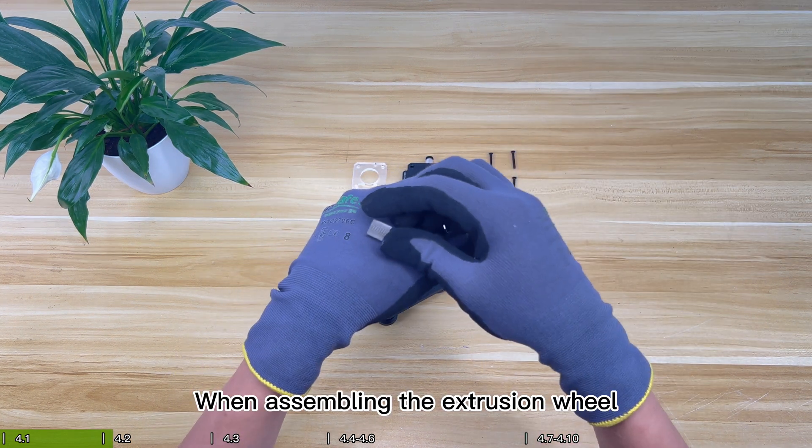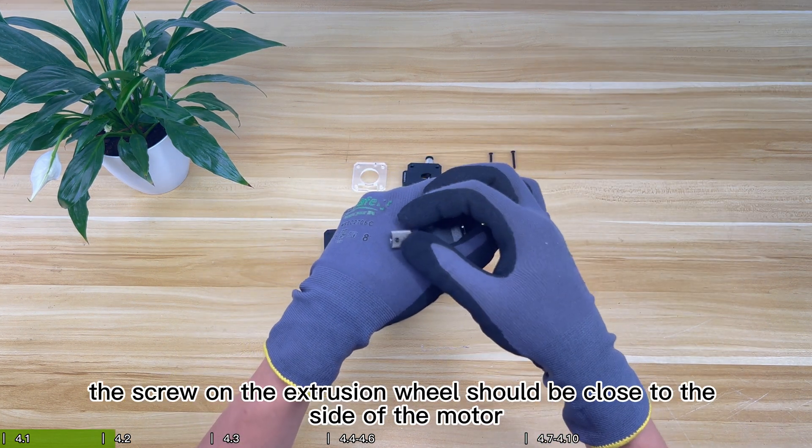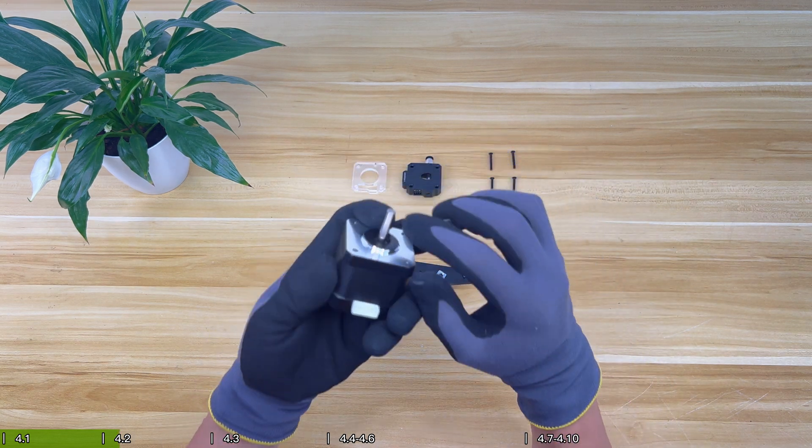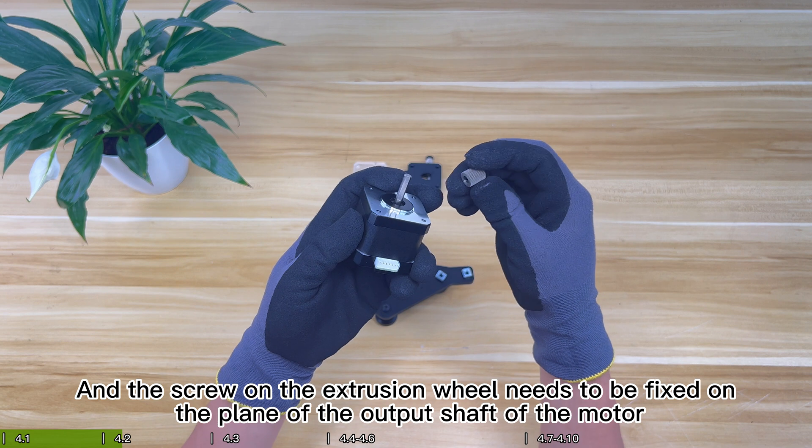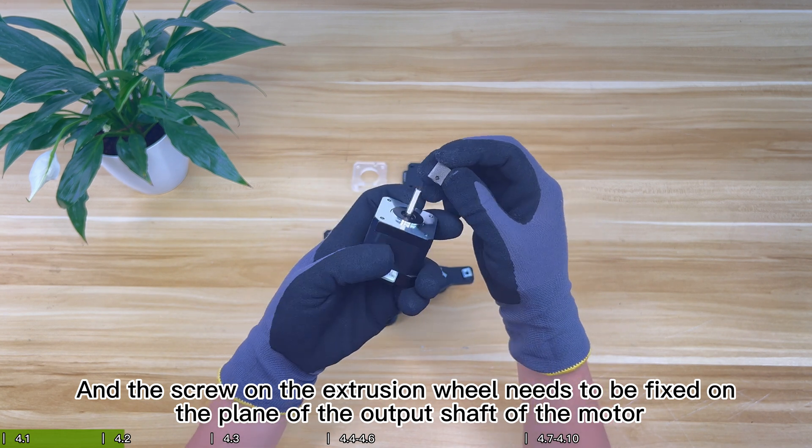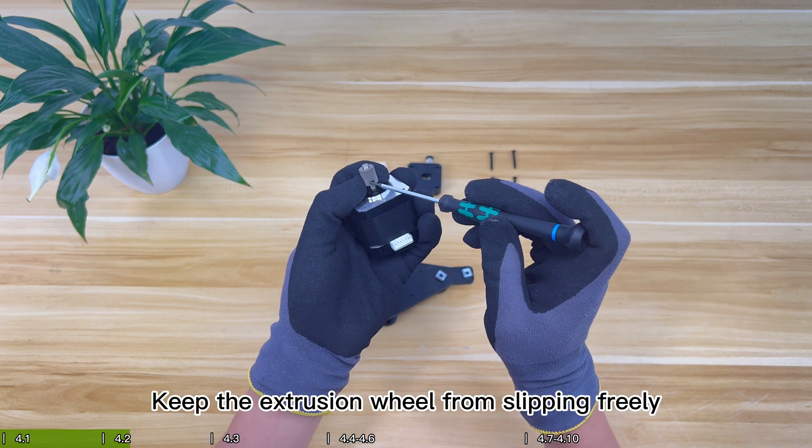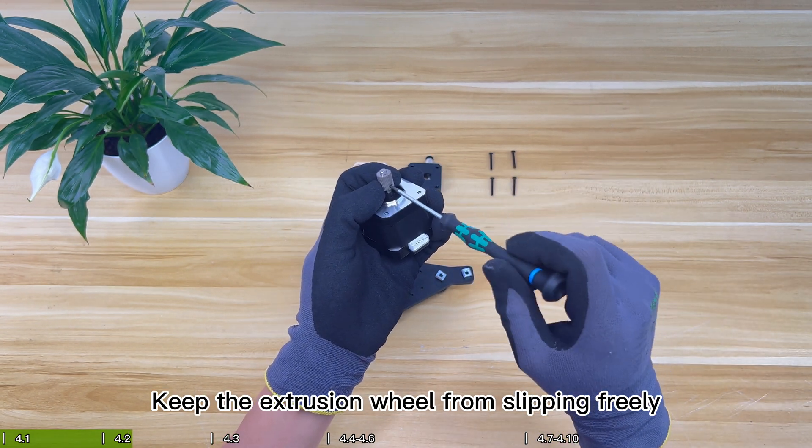When assembling the extrusion wheel, the screw on the extrusion wheel should be close to the side of the motor. And the screw on the extrusion wheel needs to be fixed on the plane of the output shaft of the motor. Properly tighten the screws. Keep the extrusion wheel from slipping freely.